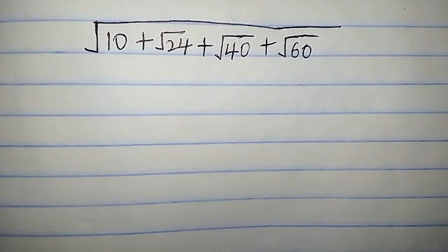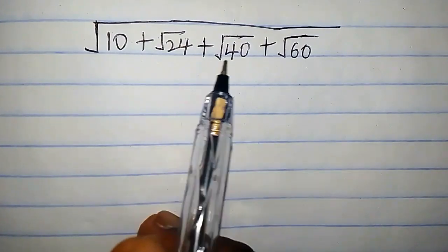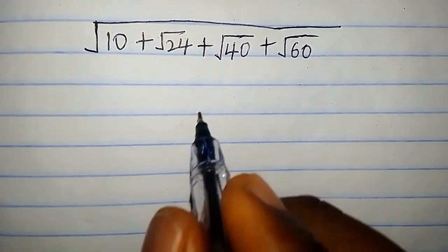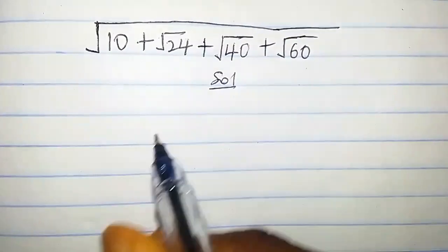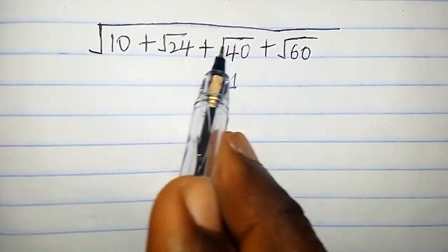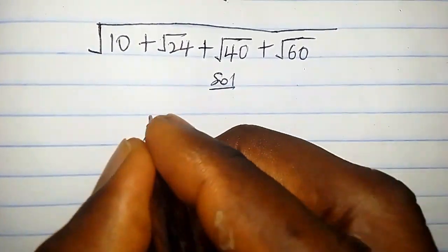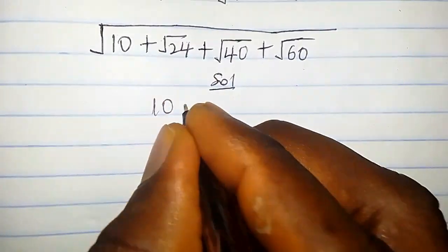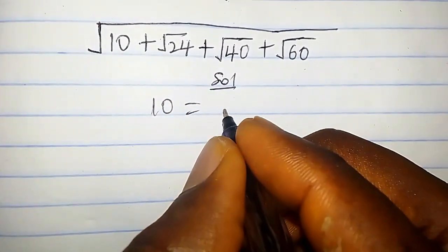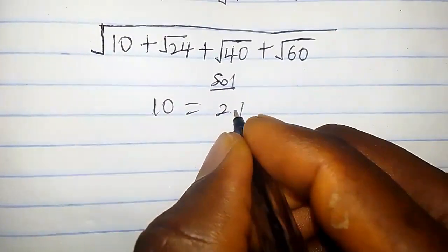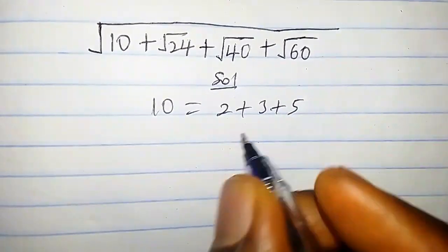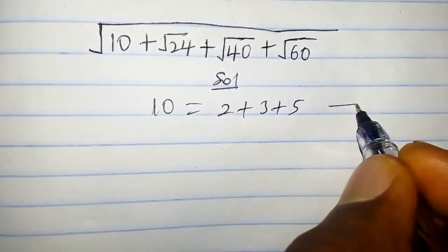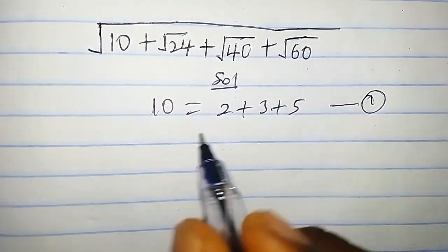Hello guys, how do we simplify this nested root problem? We are going to consider each of these. We obtain this can be written as 2 plus 3 plus 5, so let's call this equation 1.